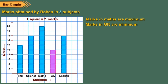Also the bar corresponding to GK is shortest, it means Rohan secured minimum marks in GK. Since the heights of bars corresponding to science and English are same, it means marks secured in science and English are equal.